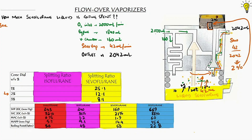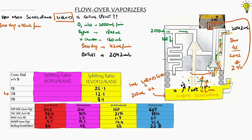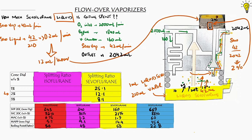Now, 42 ml/min is the sevoflurane vapor. But how much liquid sevoflurane is being consumed? One ml of inhalational liquid generates 210 ml of vapor. So 42 ml vapor ÷ 210 = 0.2 ml liquid per minute, or 12 ml of liquid sevoflurane consumed per hour at a 2% concentration dial and 2 L/min fresh gas flow.